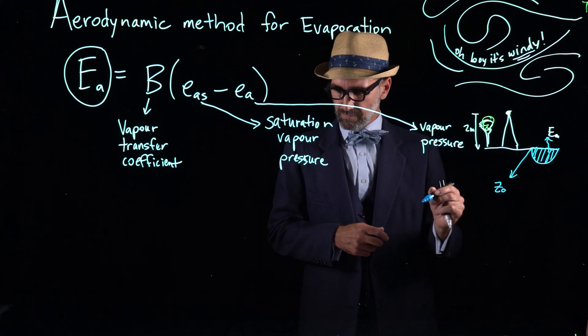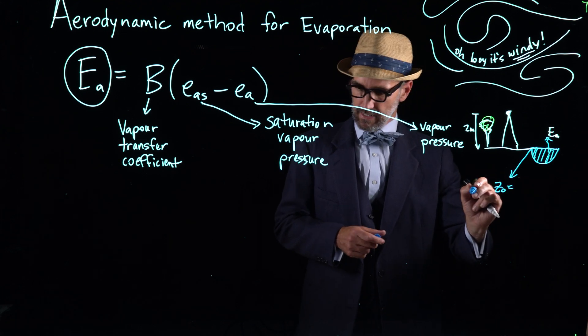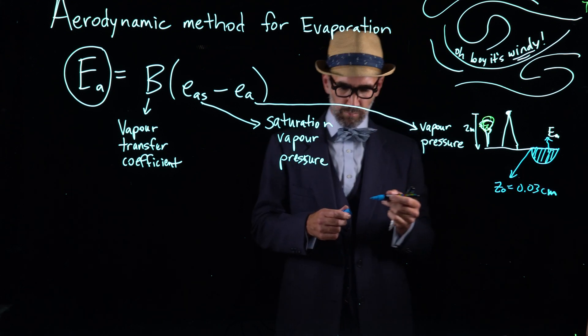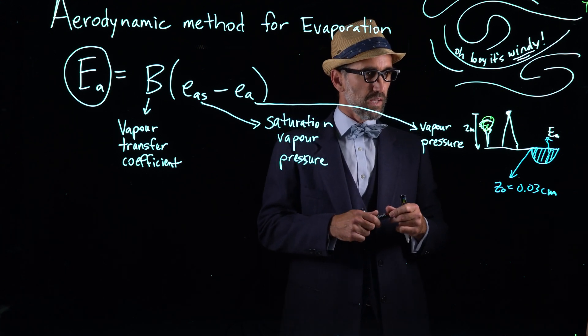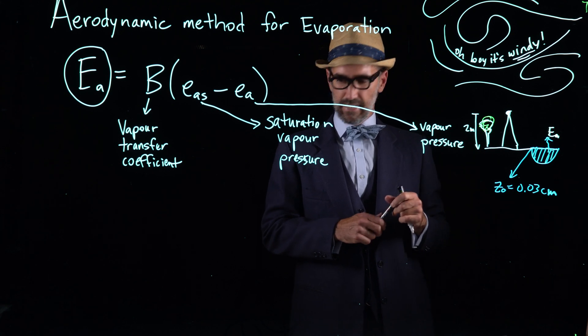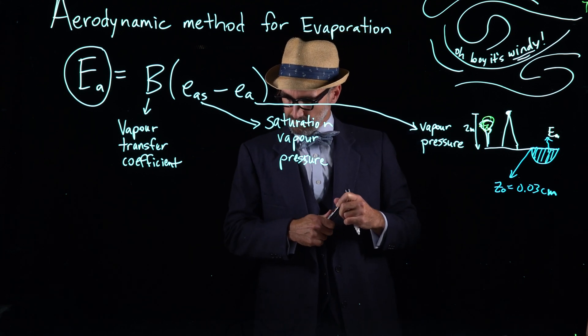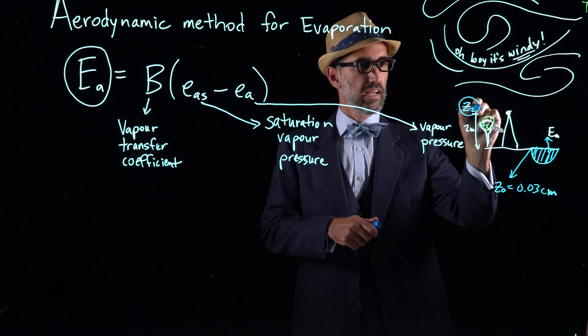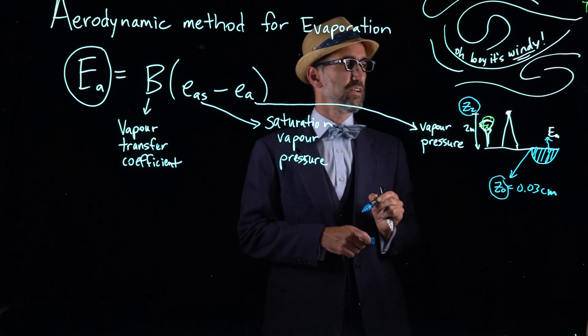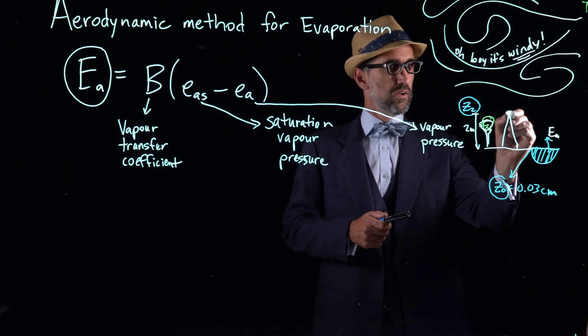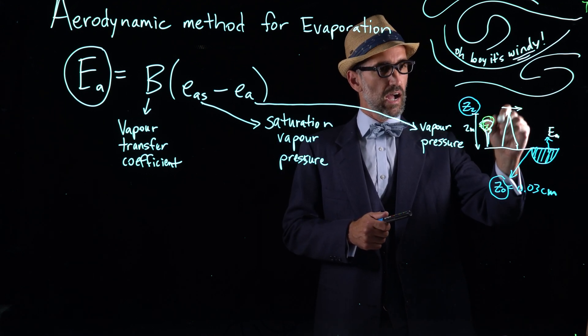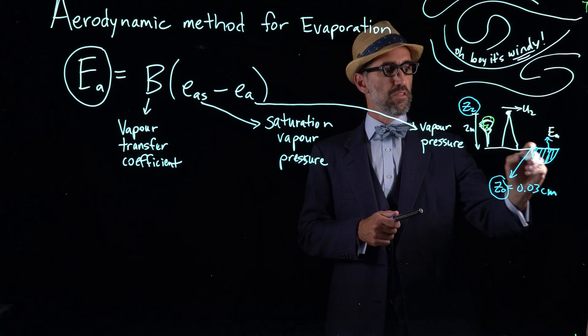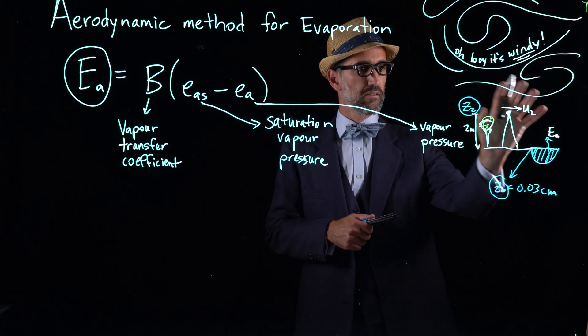So we're trying to calculate this, big E sub A. And on that water body there are small little ripples, and those ripples are what is in the aerodynamic method called z sub 0. Z sub zero, a typical value for z sub zero is 0.03 centimeters, and that's what we'll use in this problem. This second height here is just called z2. So we have z2, z0, and then we have the wind which is blowing across this two meter height interval, and this is called u2. So we have the wind velocity at a certain height and the ripples in the reservoir. So these are like three important variables for this method called the aerodynamic method.